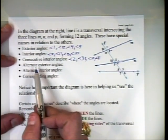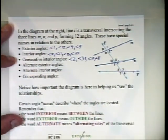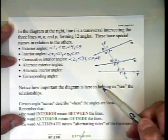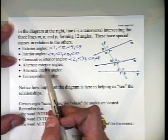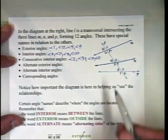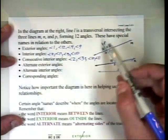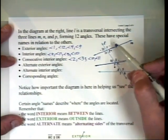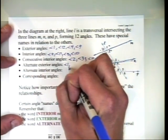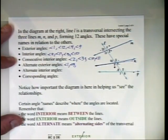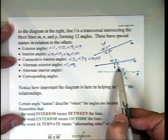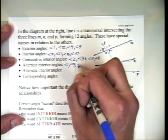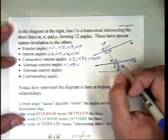We also have alternate exterior angles. 'Alternate' means opposite sides of the transversal; 'exterior' means outside the two lines. Looking at lines M and N, angle 1 and angle 9 form an alternate exterior angle pair, and angle 4 and angle 12 also form an alternate exterior angle pair — both outside on opposite sides of the transversal.